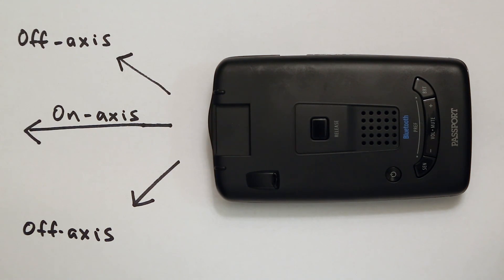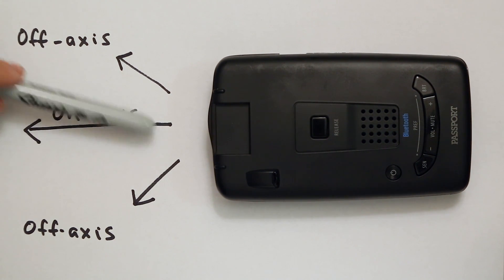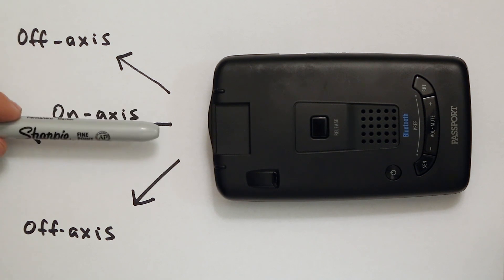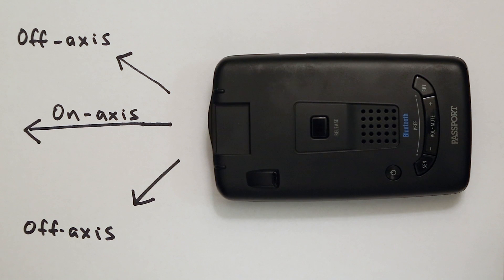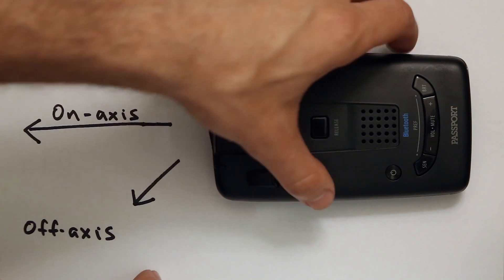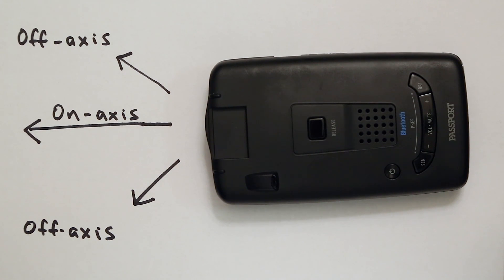The angle at which the signal arrives at the radar detector can actually impact its sensitivity and ultimately its range. So if the radar gun is pointed at an angle due to a curve in the road, the detector may not alert at all — even if there's nothing blocking the signal. The same thing applies when doing radar detector tests: you want to make sure your detector is pointed directly at the radar gun, and that every detector is pointed in the exact same direction.